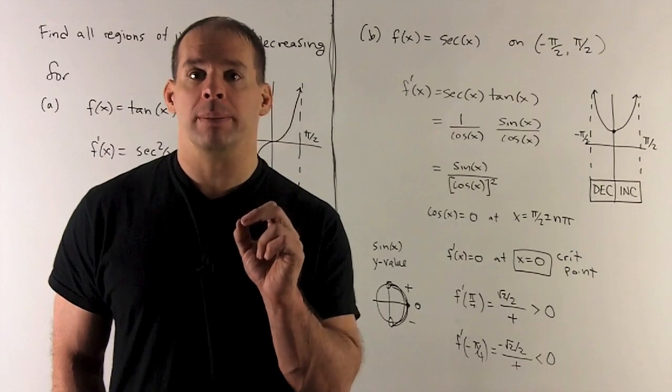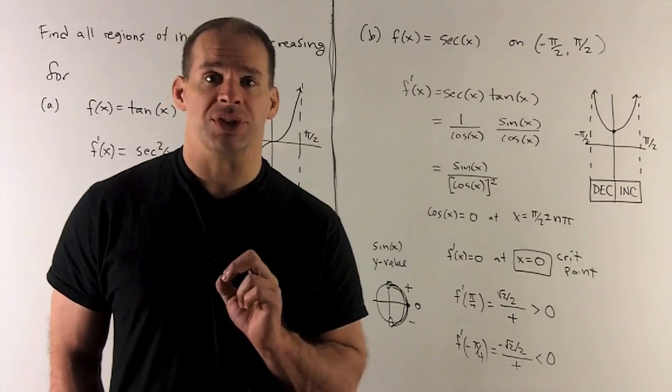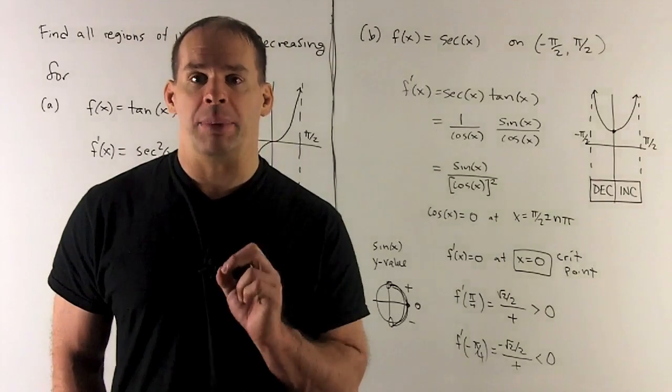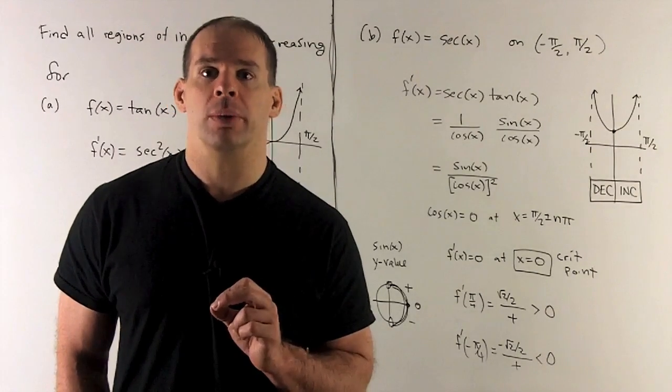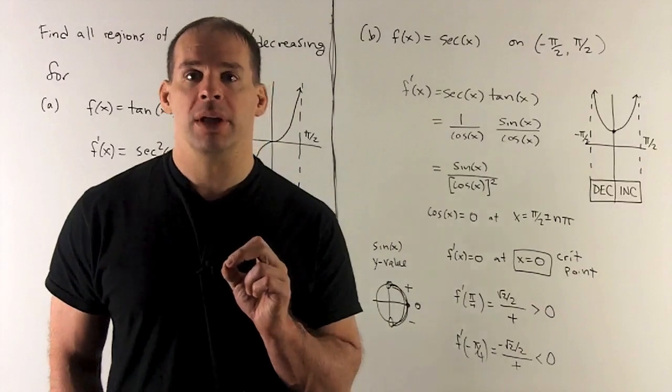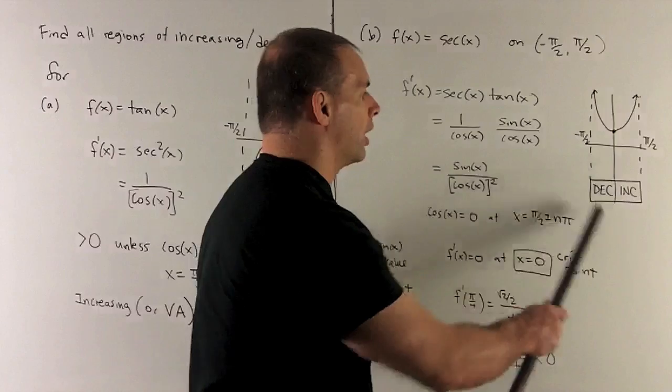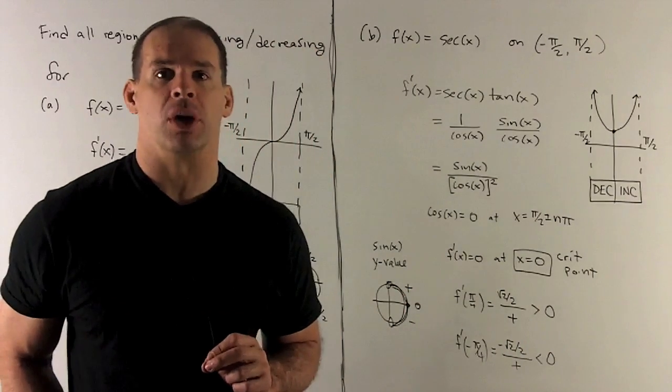So the only way I can get a critical point is if sine of x is equal to 0. For the region that we're interested in, that can only happen if x is equal to 0. So we only have one critical point, so we'll mark that. So if I have my box for increasing and decreasing, we're going to cut it right down the middle at x equals 0.